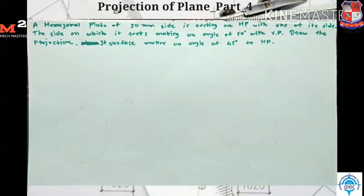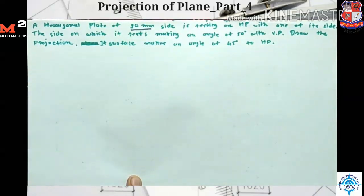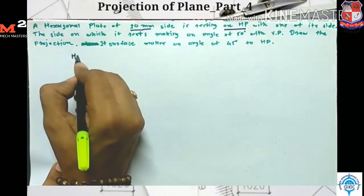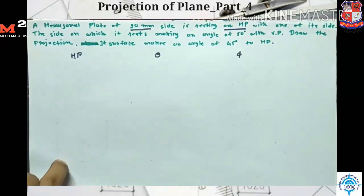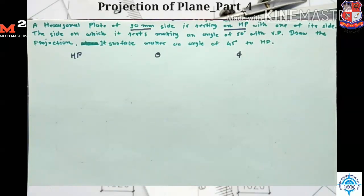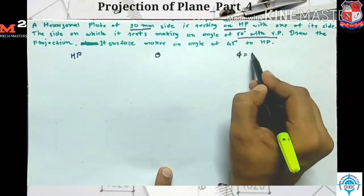Good morning friends. Today we are going to solve the problem of hexagonal plate. Here in the question, a hexagonal plate of 30 mm side is given. We are required to draw the hexagon of 30 mm side resting on HP. If the plane is resting on HP, my first stage is HP, second theta, and third phi. The side on which it rests makes an angle of 50 degrees with VP, so phi is equal to 50 degrees.